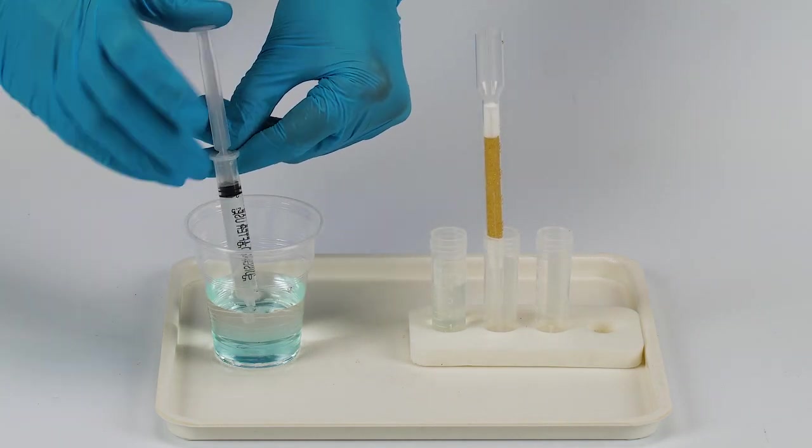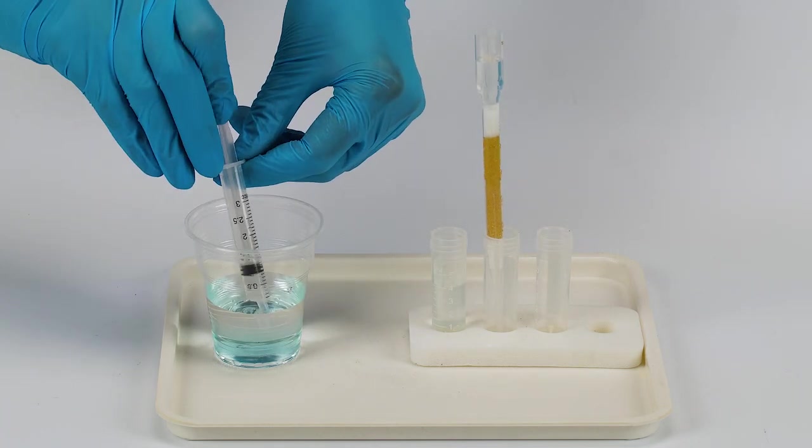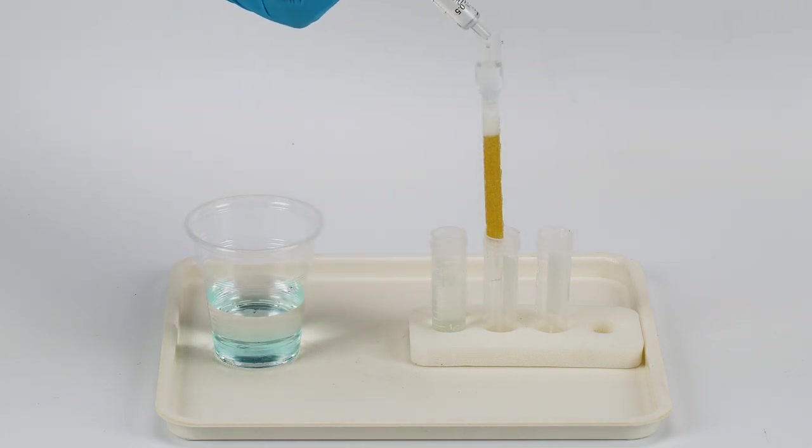Filter some of the solution. Transfer six milliliters of copper sulfate solution from the cup to the filter. Do this gradually. Wait for the solution to filter through.